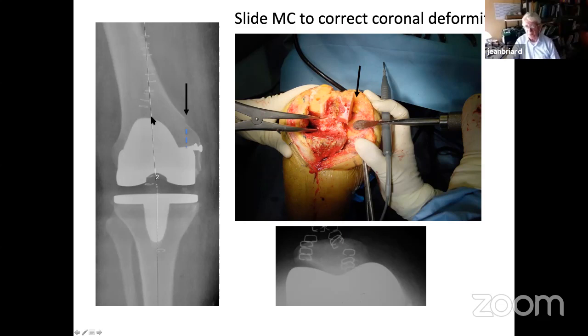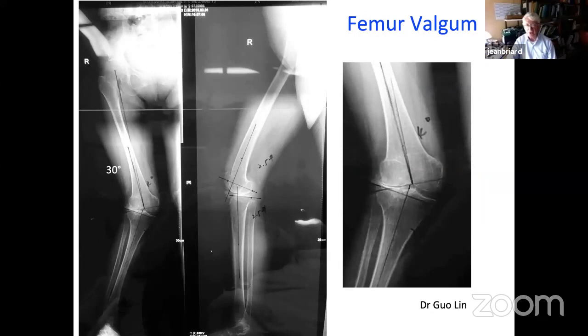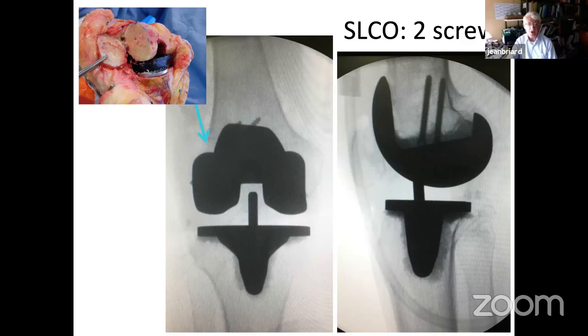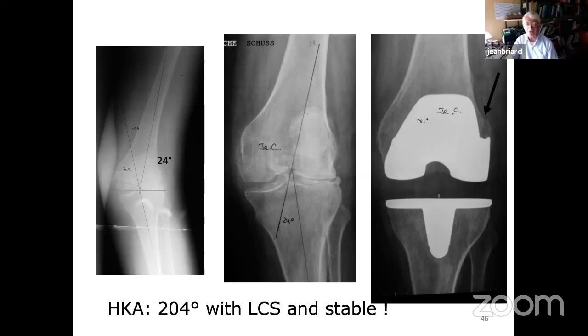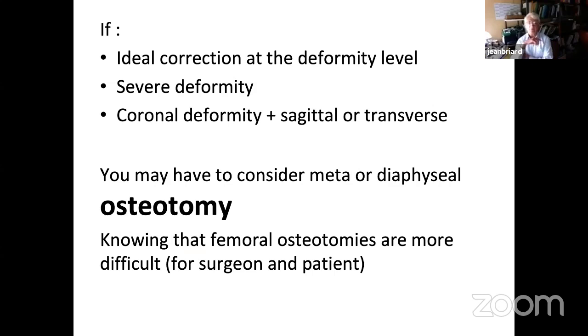A case example: no malrotation, only a femoral deformity. In flexion the knee is fine — you can make the cuts, then do a sliding osteotomy with correct distal femur cut, and the patella tracks well. That's very simple surgery — first it's like a simple total knee. Another case done by a fellow in Chongqing shows quite a severe deformity beautifully corrected with two screws. An early personal case with 24 degrees using LCS implant — not a very constrained system.